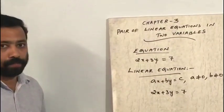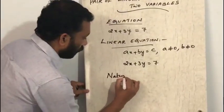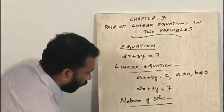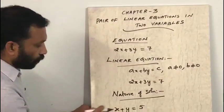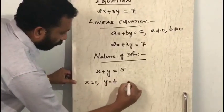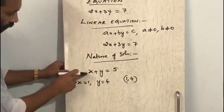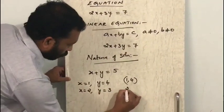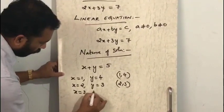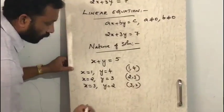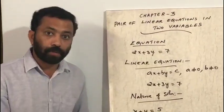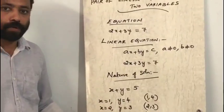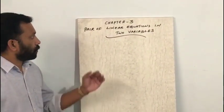Now, what is the nature of the solution of a linear equation in two variables? Consider the example x plus y equals 5. If we put x equal to 1, y will be 4, so (1, 4) is a solution. Putting x equal to 2 and y equal to 3 gives another solution (2, 3). Putting x equal to 3 and y equal to 2 gives (3, 2), and so on. We can find infinite solutions, so a linear equation in two variables has an infinite number of solutions.